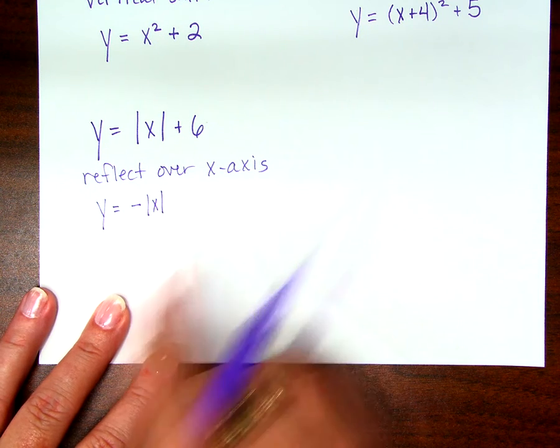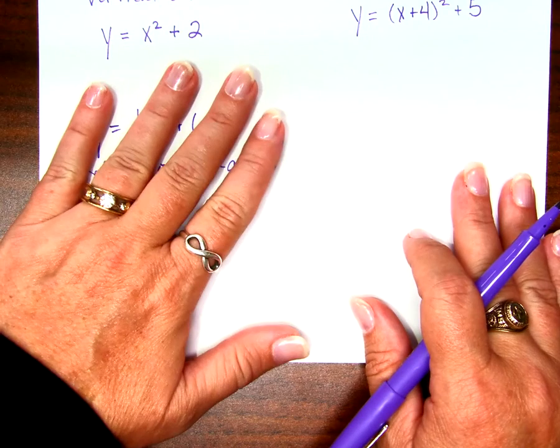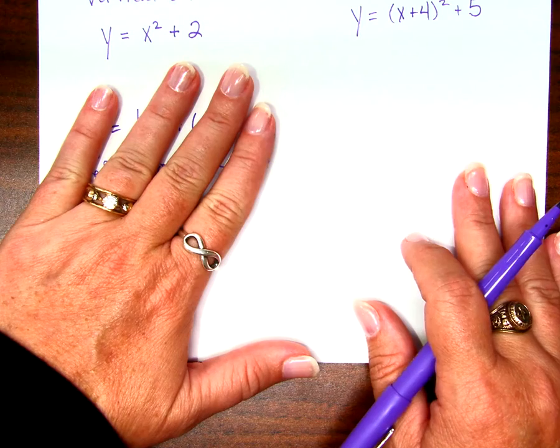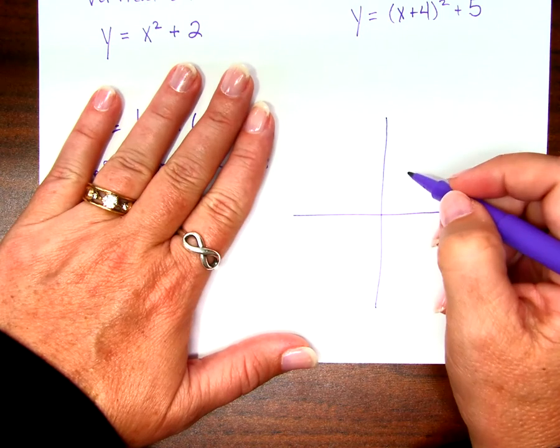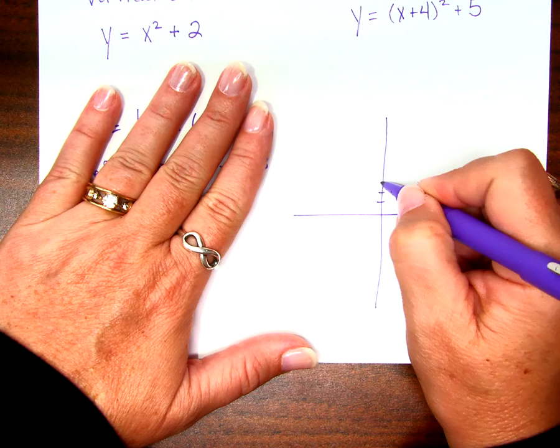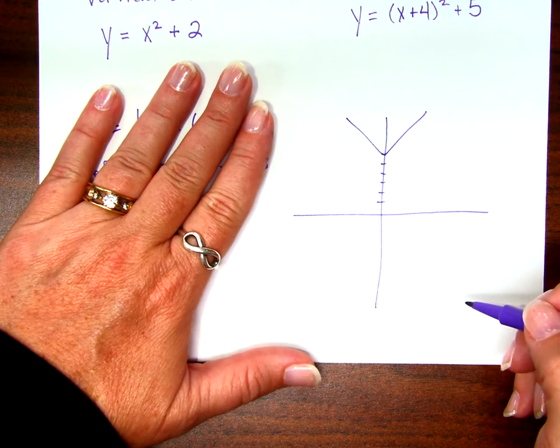If I reflect the whole function over the x-axis, where is it going to end up? So I'm going to say time out. Can I call it time out? Let's look at the graph because a lot of you are visual learners like I am. Two, three, four, five, six. That's what my original function looks like, right?